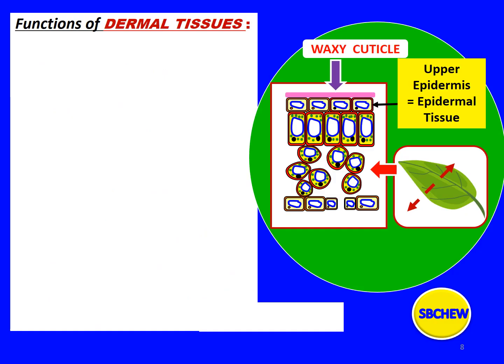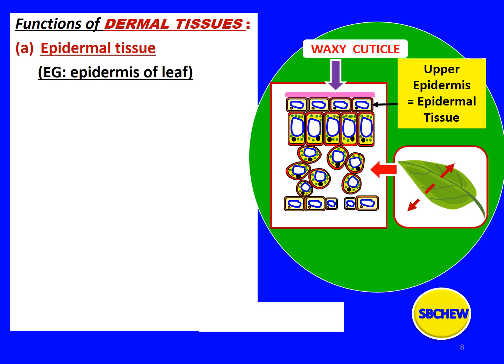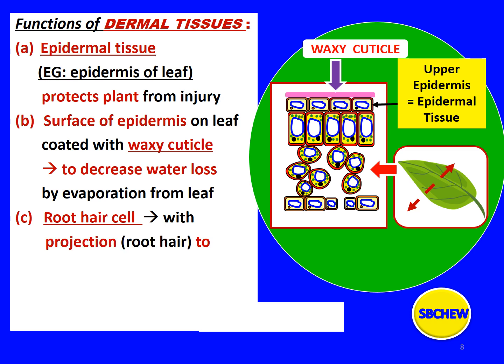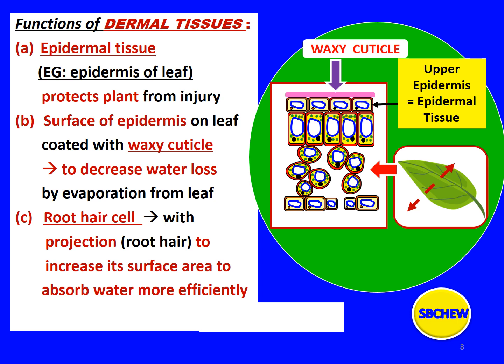What are the functions of dermal tissues? Firstly, epidermal tissues such as the epidermis of the leaf protect the plant from injury — as it is the outermost layer on the surface of the leaf, it protects the inner layers such as the mesophyll cells from injury. Secondly, the surface of the epidermis on the leaf is coated with a waxy cuticle to decrease water loss by evaporation from the leaf. Thirdly, the root hair cell is a specialized epidermal cell with a projection called the root hair to increase its surface area to absorb water more efficiently from the soil. And lastly, guard cells control the opening of the stoma.